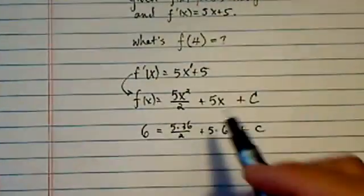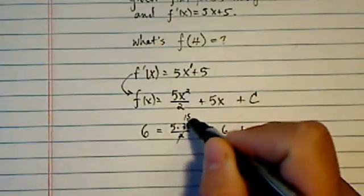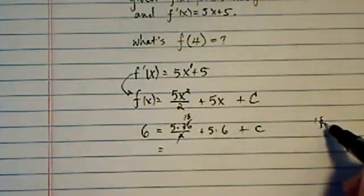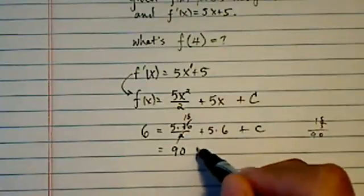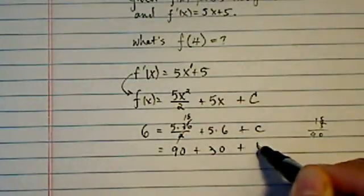That's a one-variable linear equation. It should be easy to solve. The thing is, I don't trip over myself and make some mistakes. 18 times 5 is 90. So I have 90 plus 30 plus c.